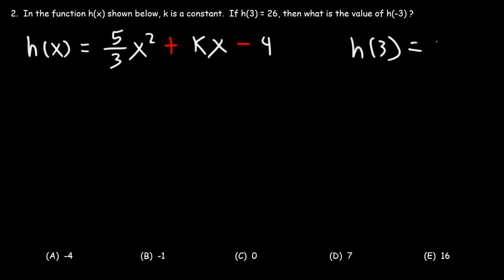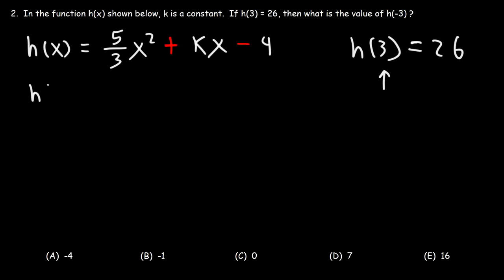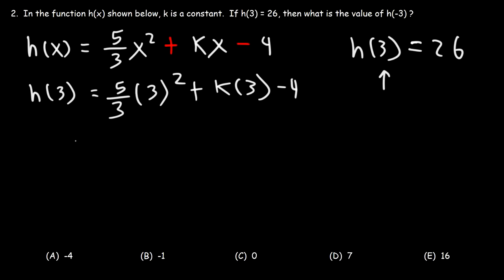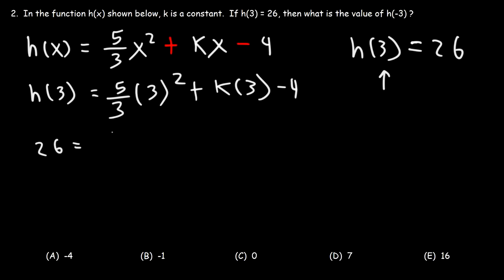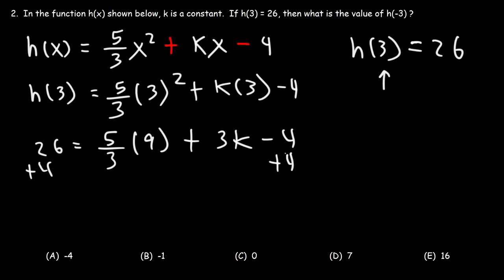Focusing on this expression, x is the number inside the function, so x is 3. That means h of x will be 26. So this is going to be 5 over 3 times 3 squared plus k times 3 minus 4. Now h of 3 equals 26, so let's replace h of 3 with 26. Now 5 over 3 times 3 squared — 3 squared is 9. If you want to, you can add 4 to both sides, so these will cancel. 26 plus 4 is 30.